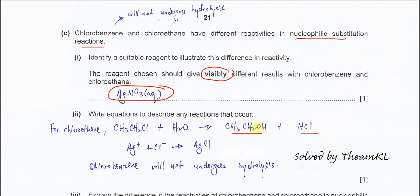So this is the hydrolysis of chloroethane, and again you already learned this in AS. Once the HCl forms, it will further react with the silver ion to form silver chloride, and this is the white precipitate. So which means chloroethane, when it reacts with silver nitrate solution, you can see white precipitate form.